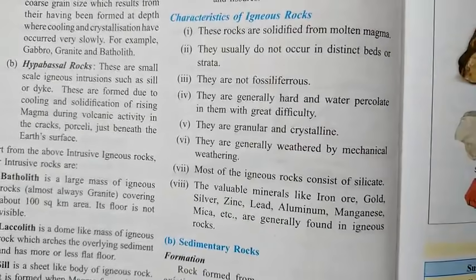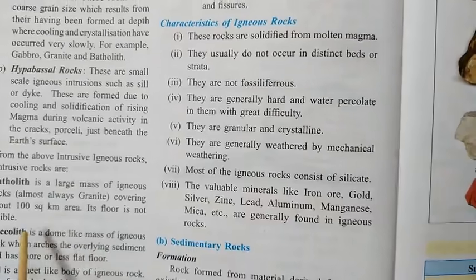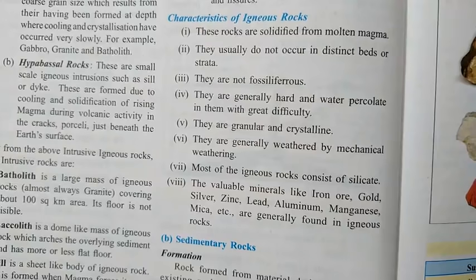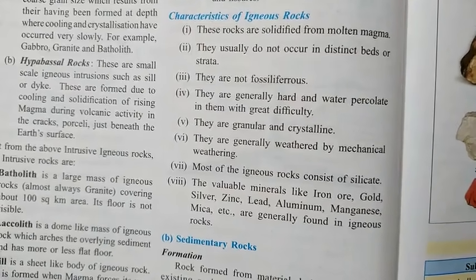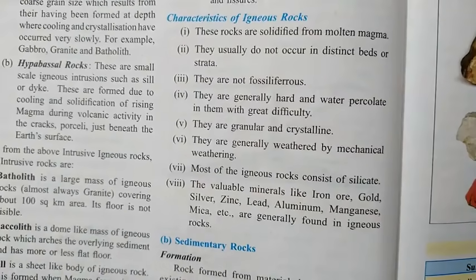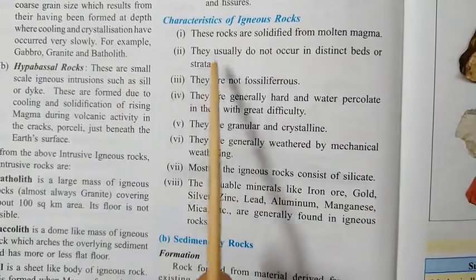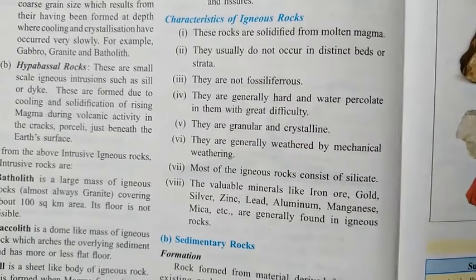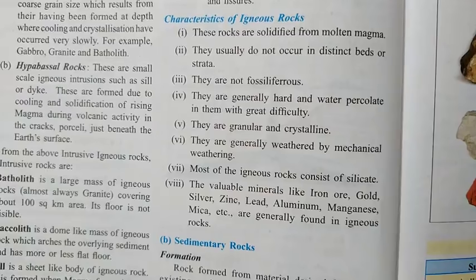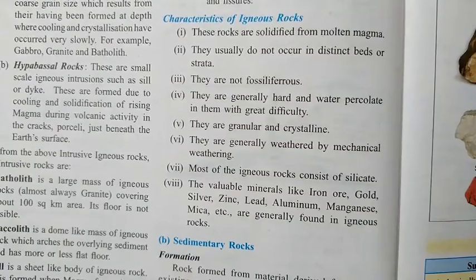Now let's see the characteristics of igneous rocks. First, they are called primary rocks because they are formed by the solidification of molten magma. Second, igneous rocks do not occur in distinct beds or strata — they do not form layers.